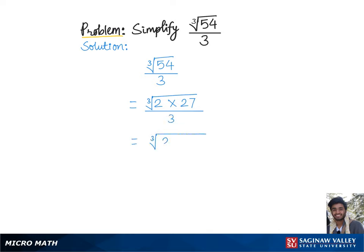Cube root of 2 times 27 can be written as 3 cubed over 3. Now this 3 cubed can be pulled out of the cube root as simply 3, and we have cube root of 2 divided by 3.